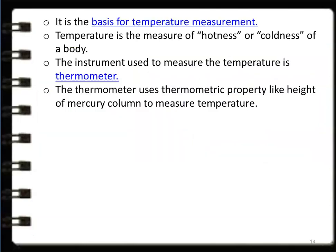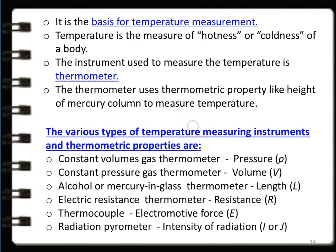The zeroth law of thermodynamics is the basis for temperature measurement. Temperature is the measure of hotness or coldness of a body; the instrument used to measure temperature is called a thermometer. Using the zeroth law, we identify temperature as a new thermodynamic property. A thermometer uses a thermometric property — such as the height of a mercury column — to measure temperature. Types of thermometers and their thermometric properties include: constant volume gas thermometer (gas pressure), constant pressure gas thermometer (volume of gas), and alcohol or mercury-in-glass thermometer (length of mercury column), which is the popular thermometer used by doctors.